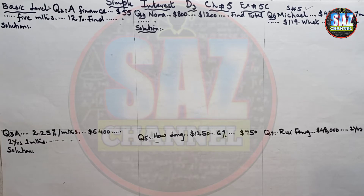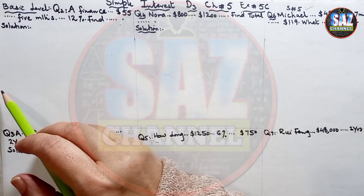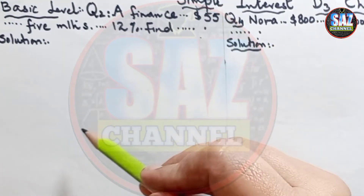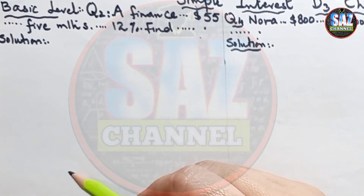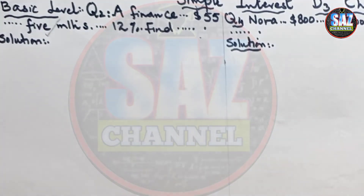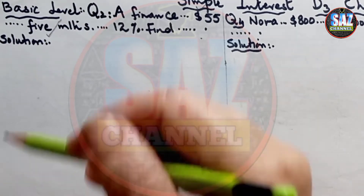In this lesson, I will solve question number 2, basic level. As the questions are long, I will be reading from the book, so please read the question from the book as well. The question says: a finance company charges $1.55 simple interest on a sum of money which is borrowed for 5 months, given that the rate of interest is 12% per annum. Find the sum of money.